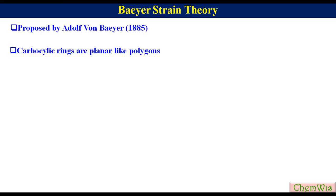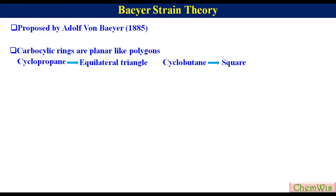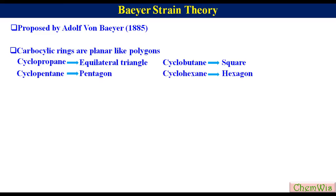This means cyclopropane is just like an equilateral triangle, cyclobutane is just like a square, cyclopentane is just like a pentagon, and cyclohexane is just like a hexagon.